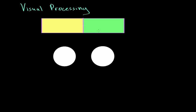Let's imagine that this rectangle I drew is our entire visual field. If these two eyeballs were focused in at the center of this rectangle — focused on this purple line — all they can see are these two colors on either side.